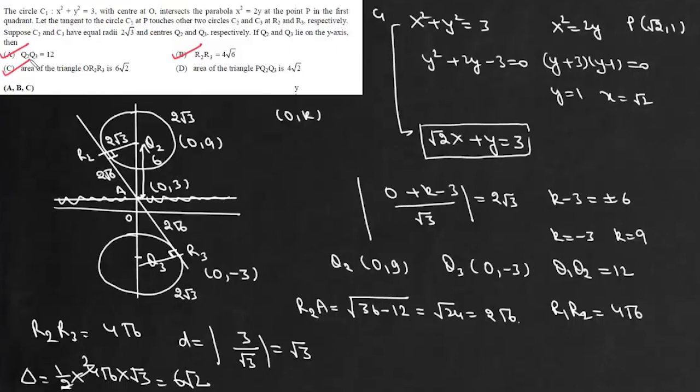Option D is the area of triangle PQ₂Q₃. Now Q₂Q₃ is 12.